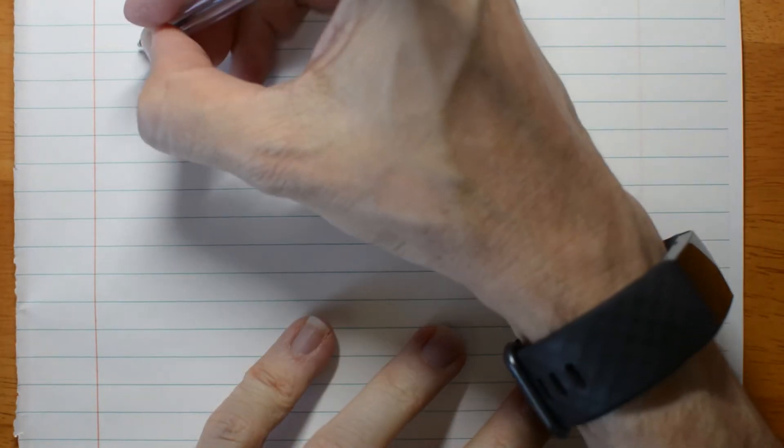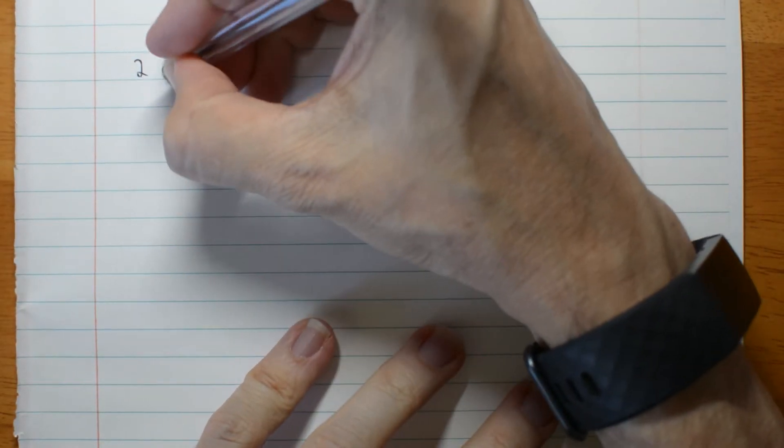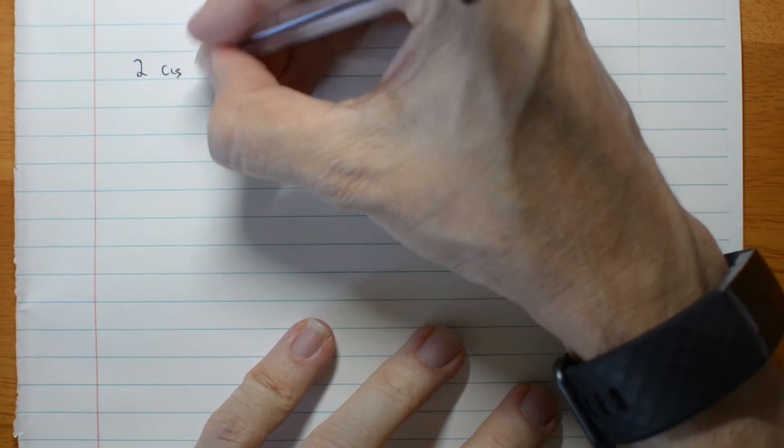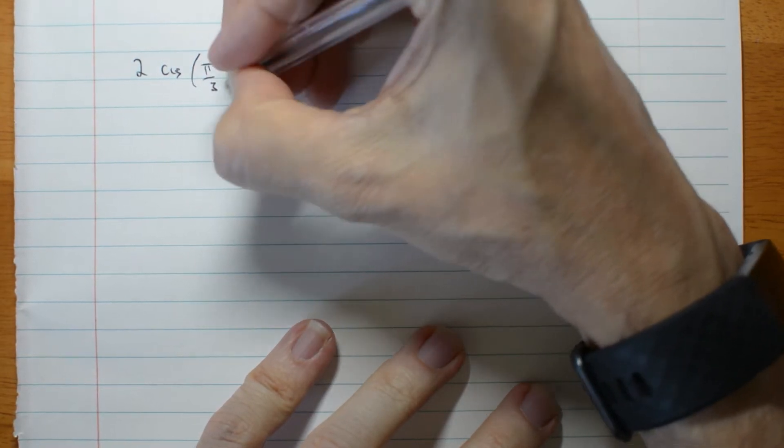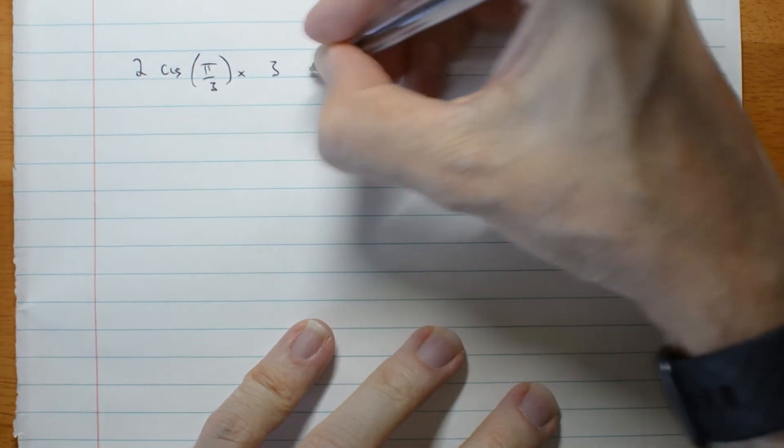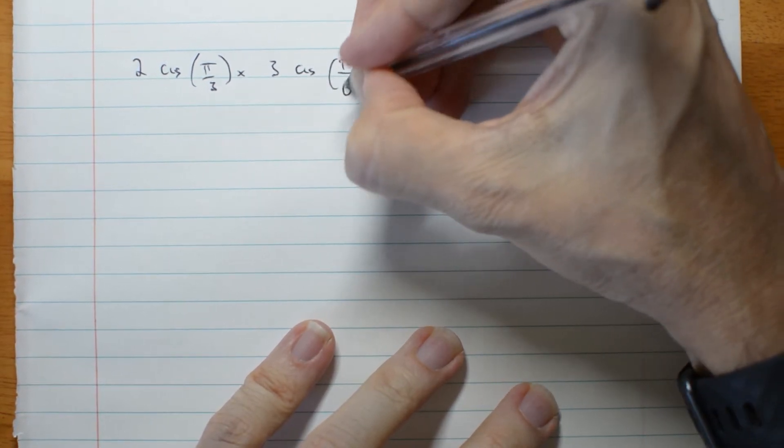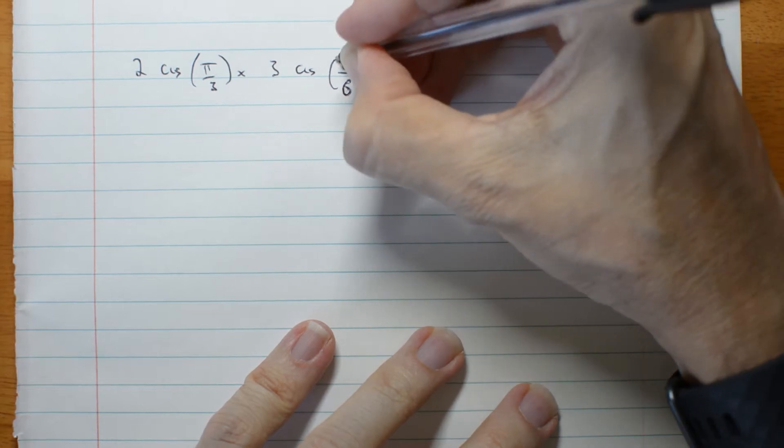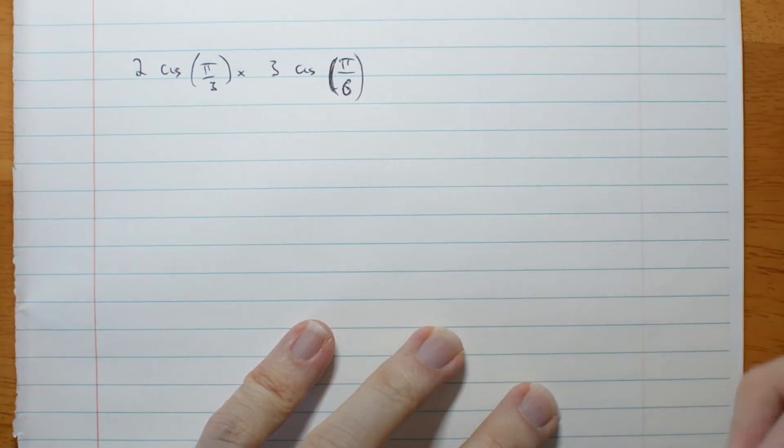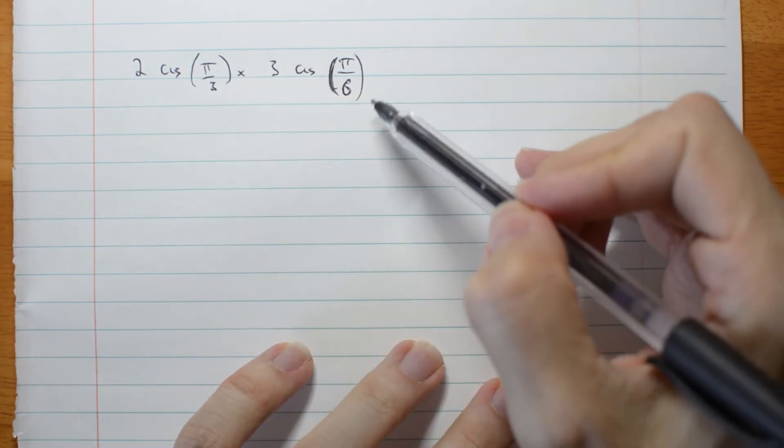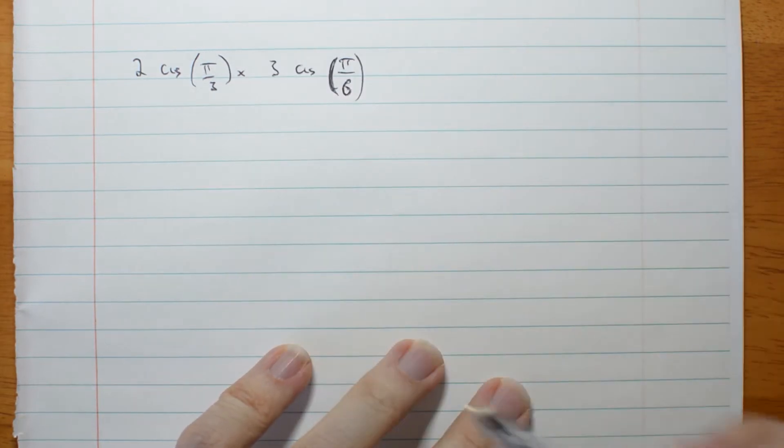So let's try 2 cis π/3 times 3 cis π/6. Oops, that was meant to be a 6. So because I'm given numbers in complex numbers in polar form, I'm going to answer in polar form unless they tell me otherwise. Because it's very easy to do this.